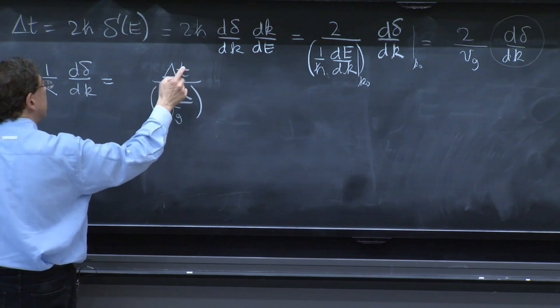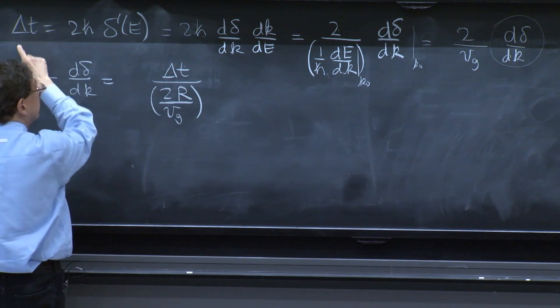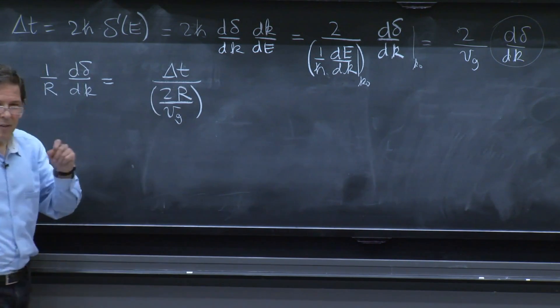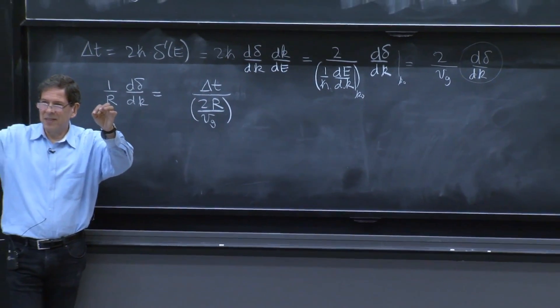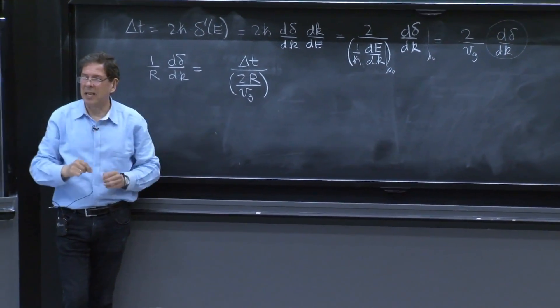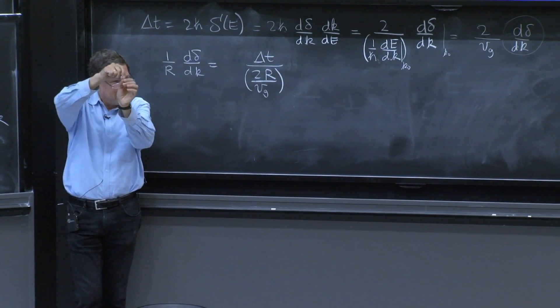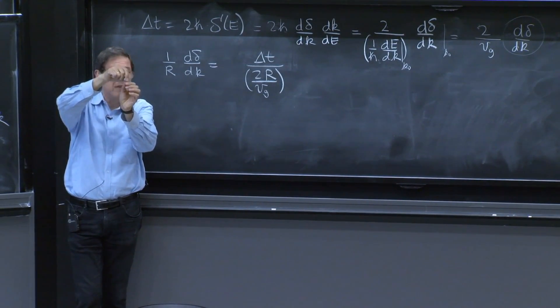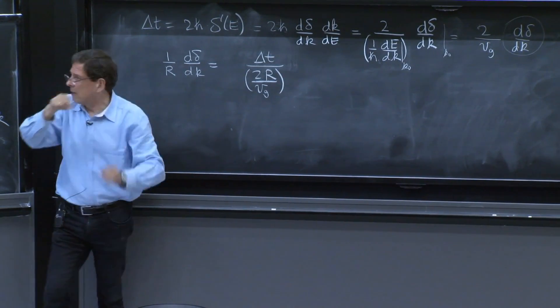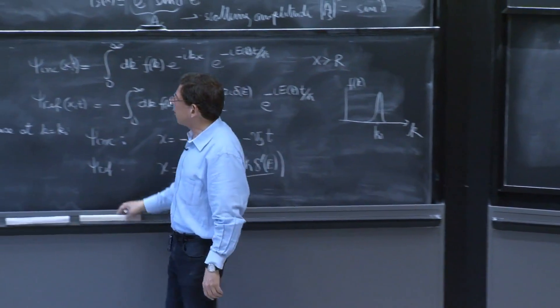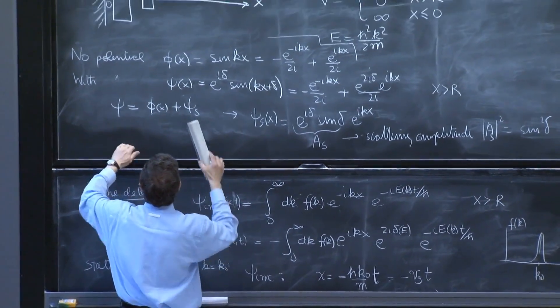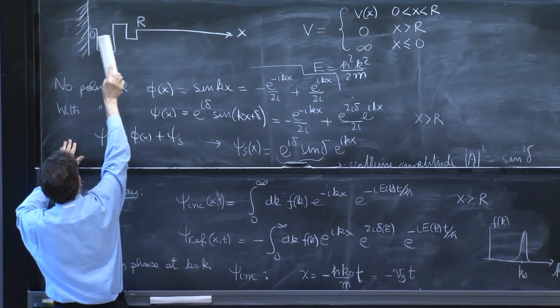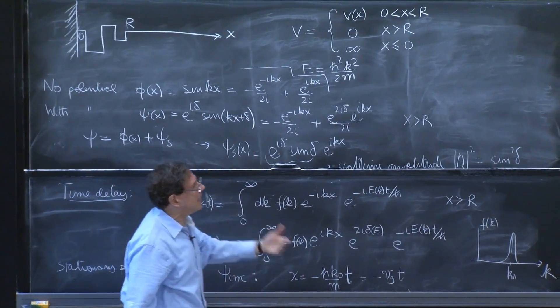Delta t is the delay. But you now have divided it by 2r divided by the velocity, which is the time it takes the particle with the group velocity to travel back and forth in the finite range potential. So that gives you an idea.